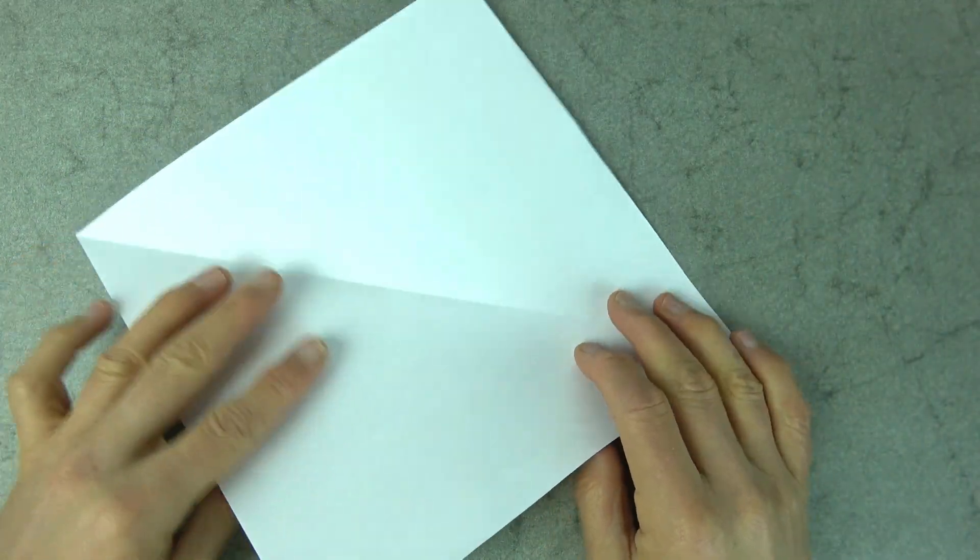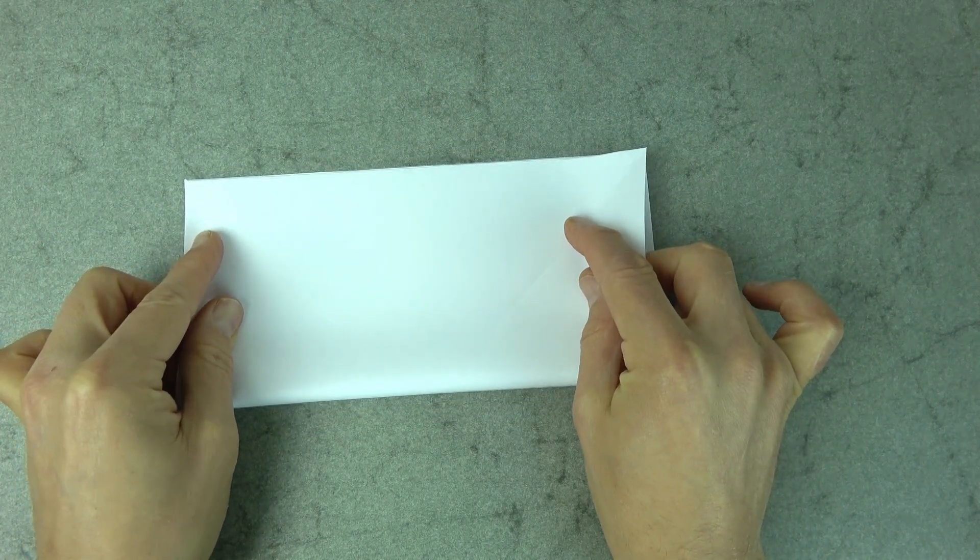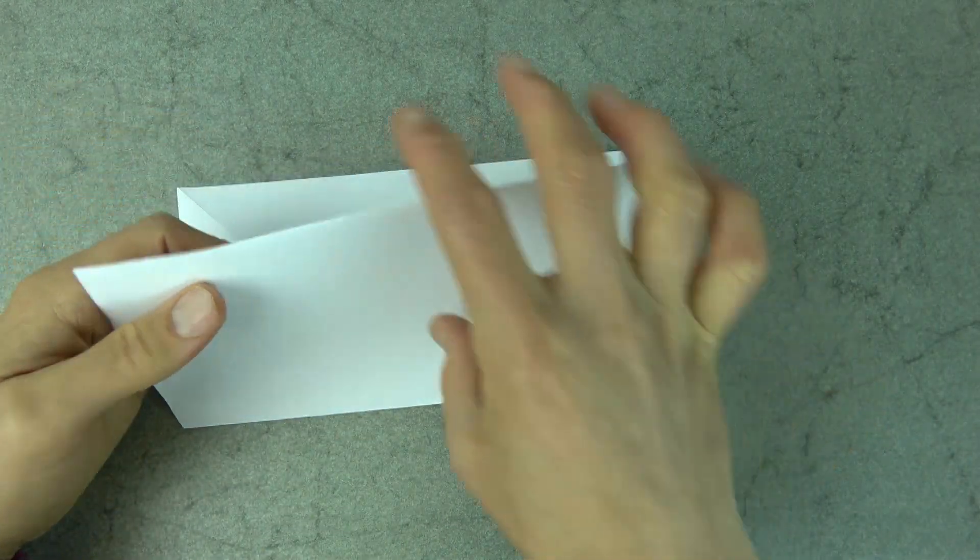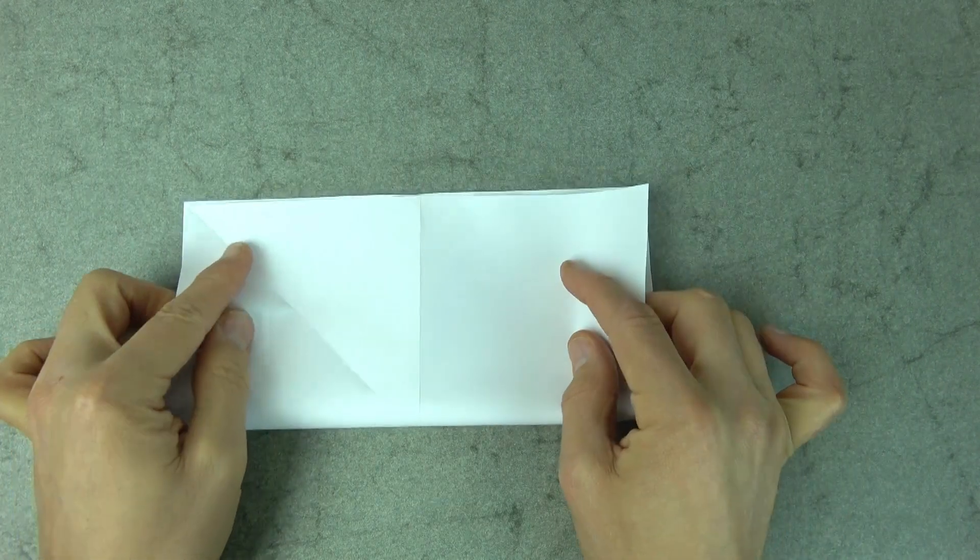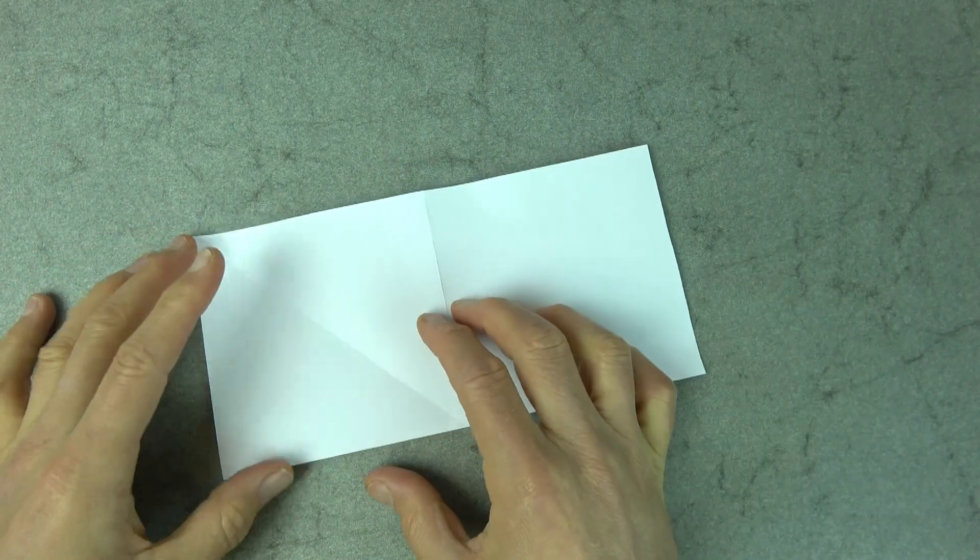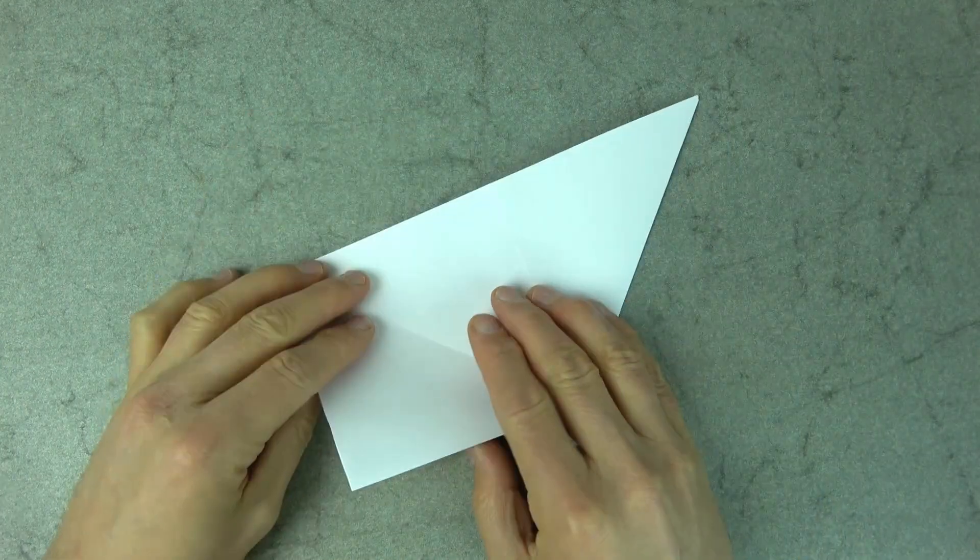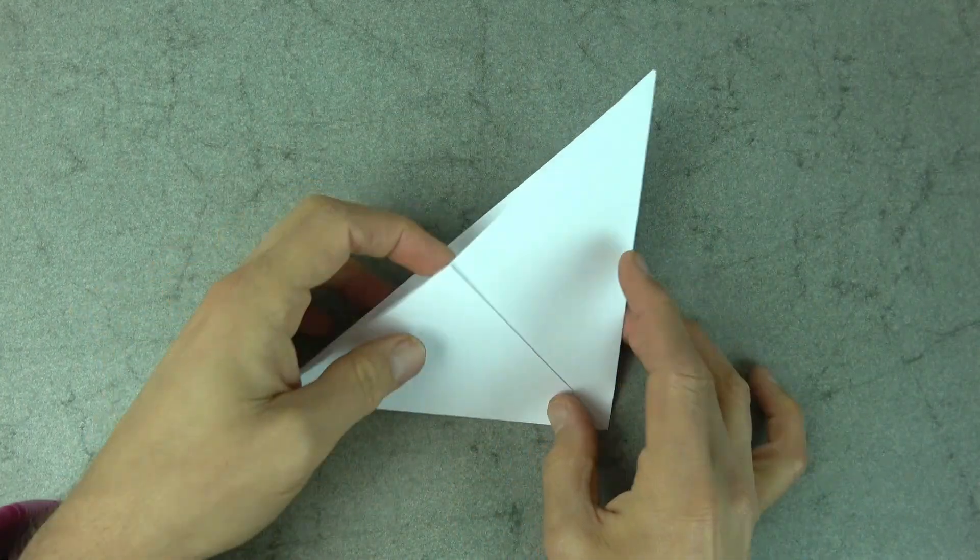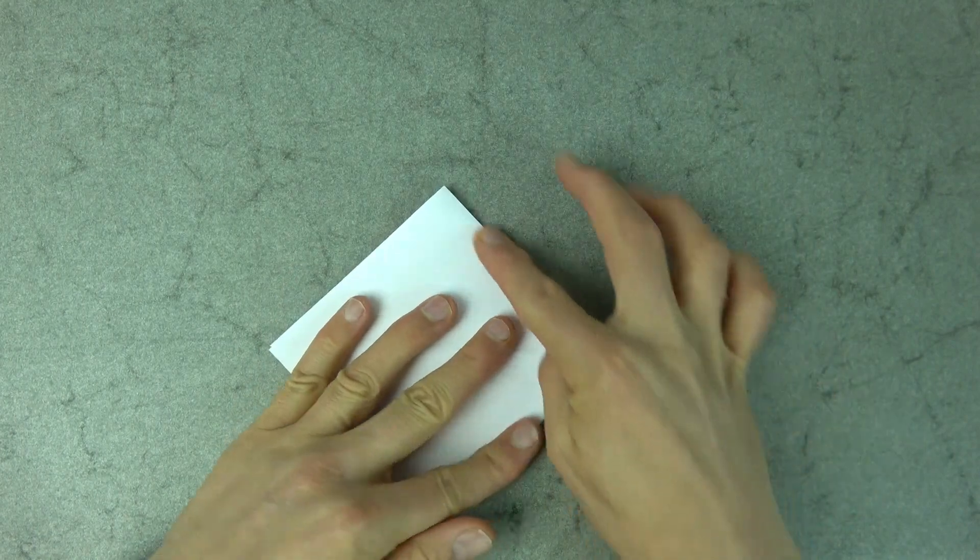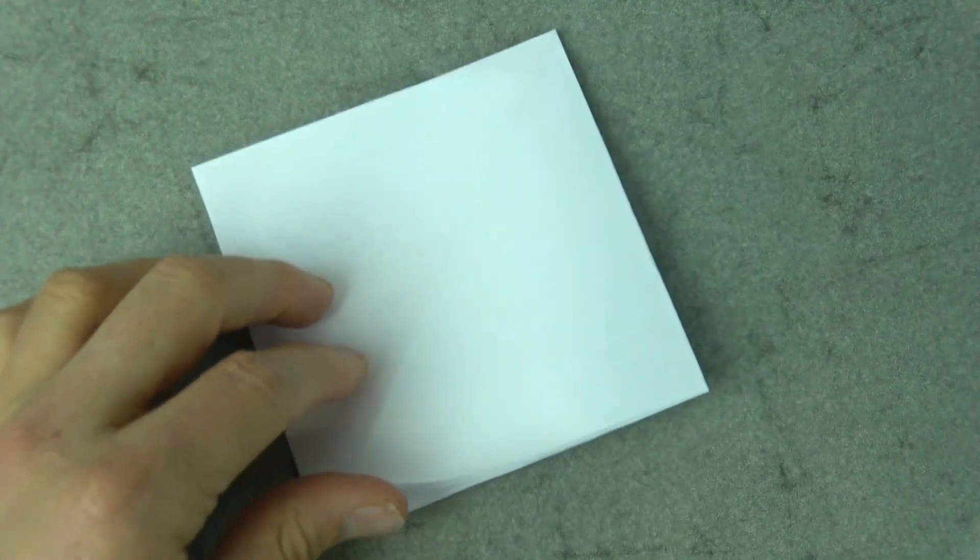Okay, so let's start out by turning over and fold it in half. And let's fold a square base. Okay, so here we have the square base.